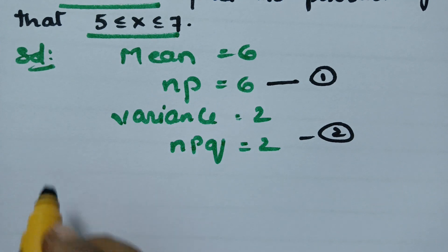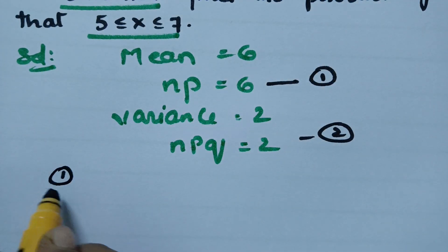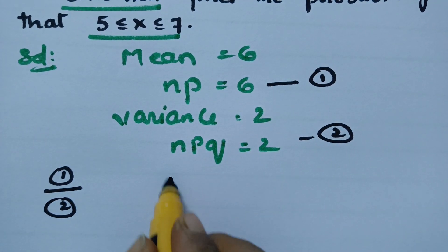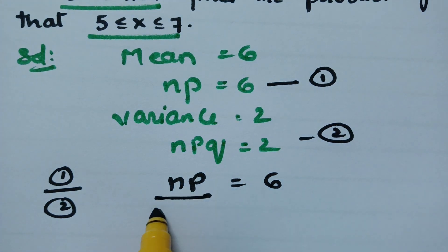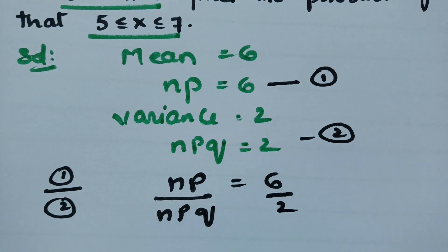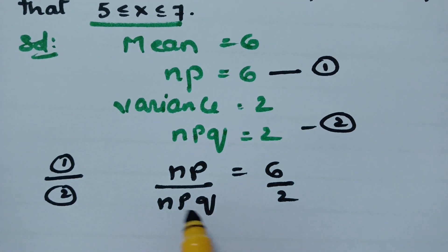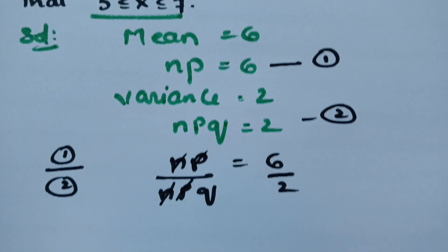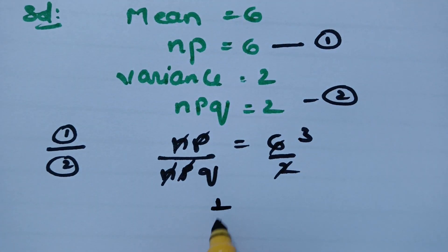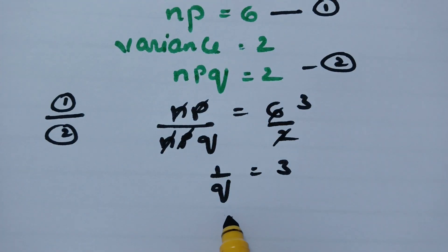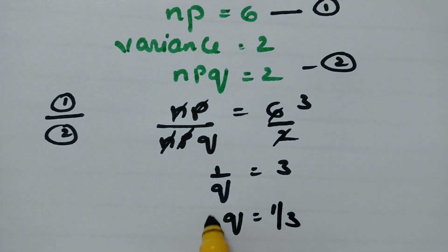Now, if I divide equation 1 by equation 2: NP = 6 and NPQ = 2. If I cancel NP, we get 1/Q = 3, so Q = 1/3.